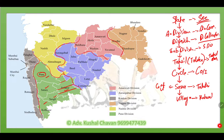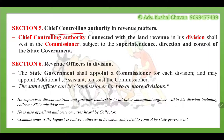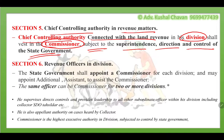Section 5 deals with the chief controlling authority in revenue matters. The chief controlling authority connected with land revenue in a division is the divisional commissioner. He is subject to the superintendence, direction and control of the state government. At the division level, the commissioner is the highest revenue authority, and he is appointed by the state government.